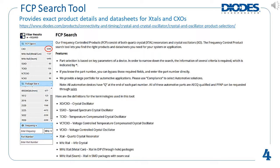The package size field lists many options: 7050 size, which is 7.0 millimeters by 5.0 millimeters, down to 1612 size, plus various other package options. The frequency can be entered in megahertz or kilohertz by selecting the drop-down menu. After entering these parameters, parts matching the requirements will be displayed. Notice the numbers listed next to each parameter — these indicate the quantity of devices Diodes has made with that specific feature. For example, Diodes has currently made 5,595 different versions of CXOs. These numbers keep growing as Diodes creates additional devices, and the FCP search tool is constantly updated with new parts.